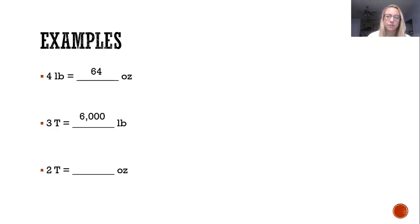And down at the bottom I have two tons and I'm going into ounces. There are 32,000 ounces in a ton. Two times 32,000 is 64,000.